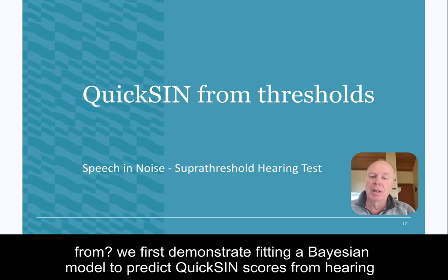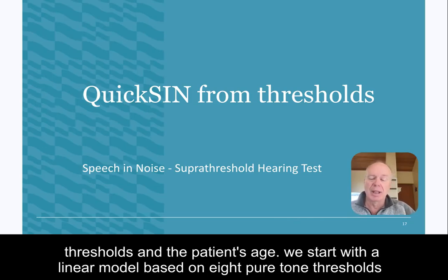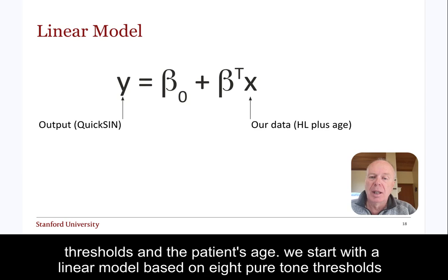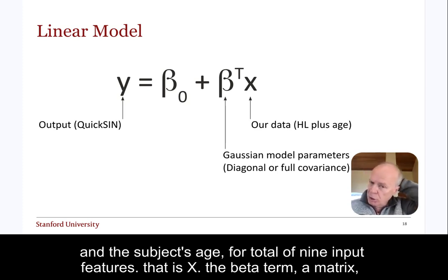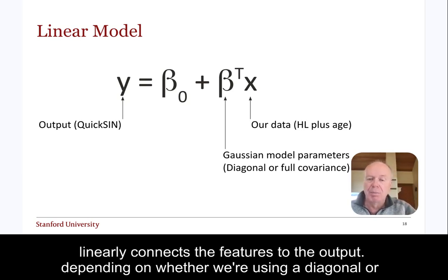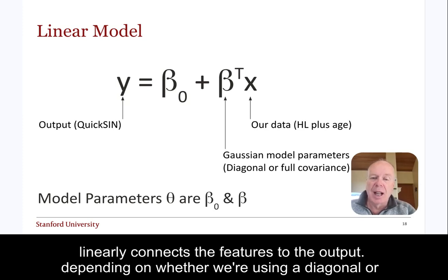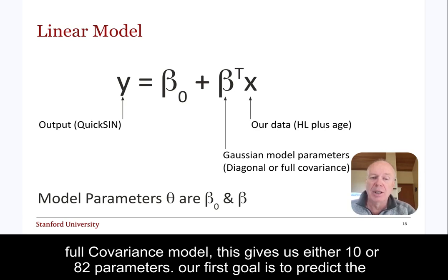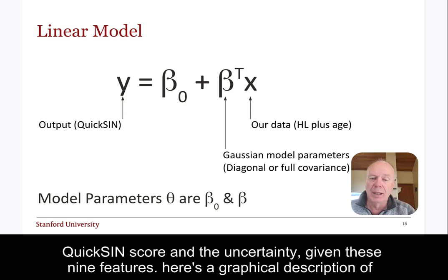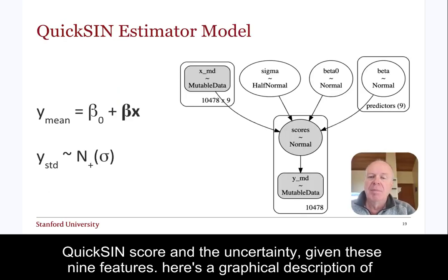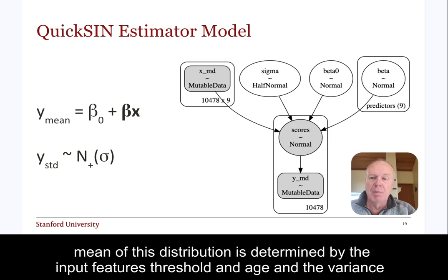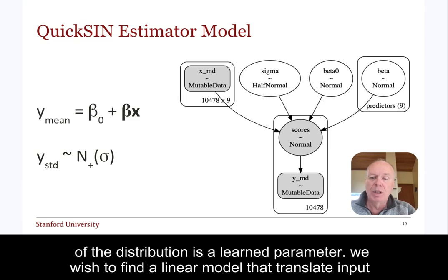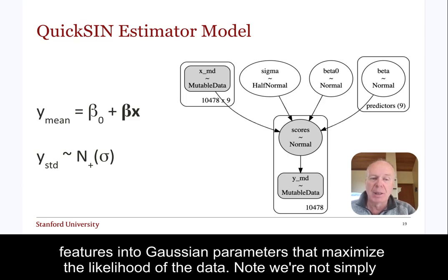We first demonstrate fitting a Bayesian model to predict QuickSyn scores from hearing thresholds and the patient's age. We start with a linear model based on 8 pure tone thresholds and the subject's age for a total of 9 input features, that is x. The beta term, a matrix, linearly connects the features to the output. Depending on whether we are using a diagonal or full covariance model, this gives us either 10 or 82 parameters. Our first goal is to predict the QuickSyn score and the uncertainty given these 9 features. We are modeling the data with a Gaussian distribution, where the mean is determined by the input features — threshold and age — and the variance is a learned parameter.